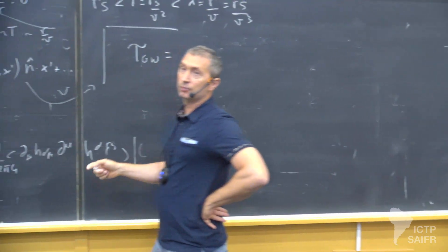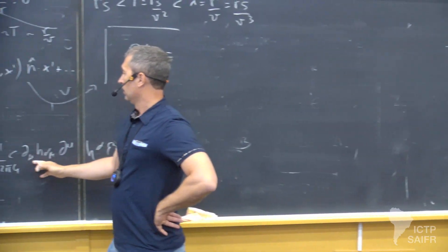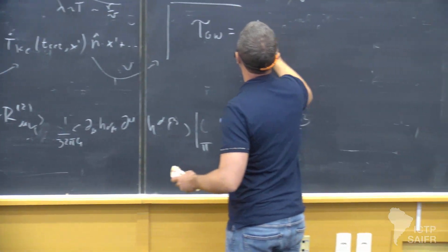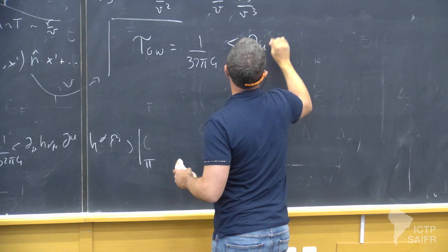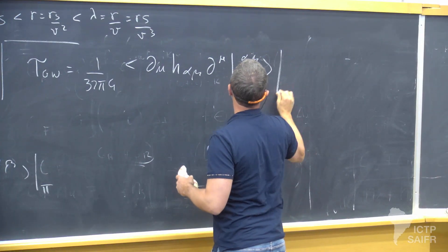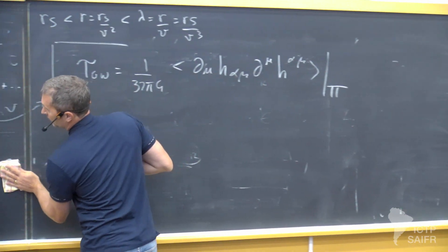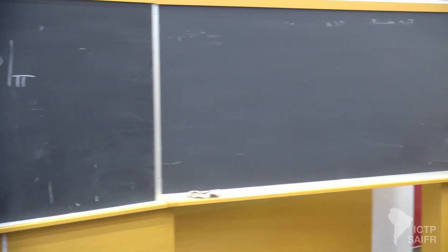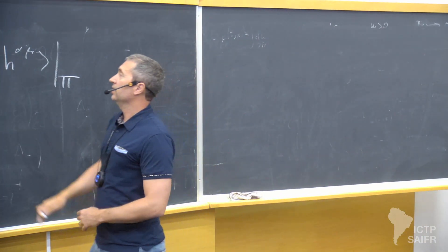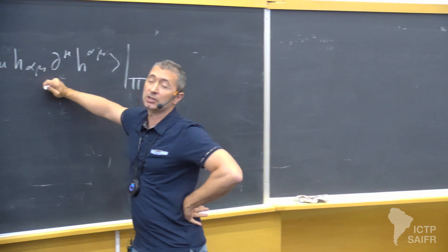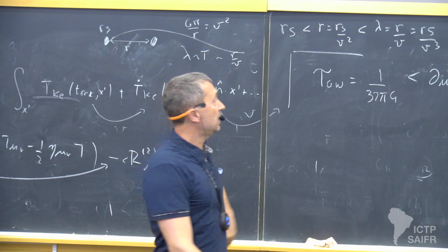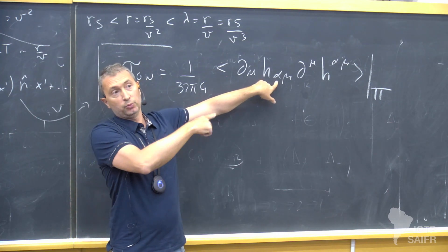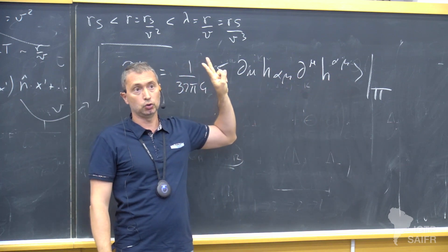Basically, each polarization counts as if it was a scalar field. Suppose we are dealing with a scalar field — what would be the energy? It would have been (d phi)^2. So it's like each polarization of the gravitational wave is contributing like a scalar field. But we know we would be badly over-counting if you consider all the polarizations. We know there are only two: plus and cross — specifically XX, XY, YX, and YY contributing. So we can write this as 1 over 16 pi G times (H dot plus squared plus H dot cross squared), averaged over a wavelength.